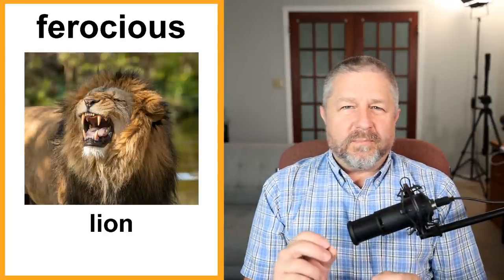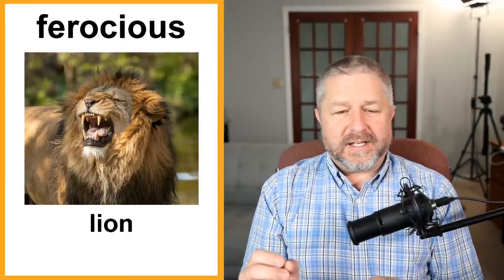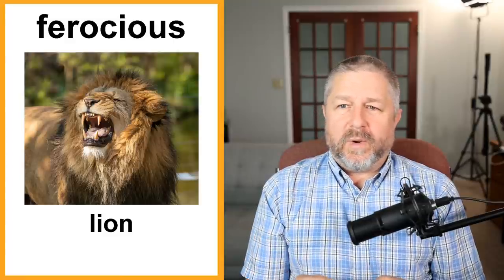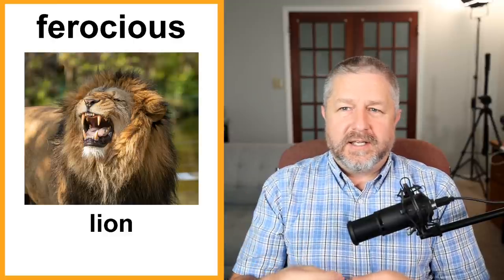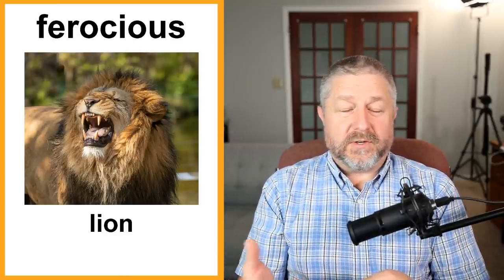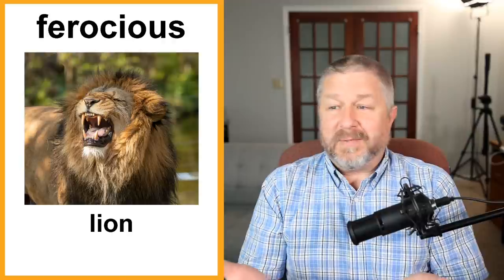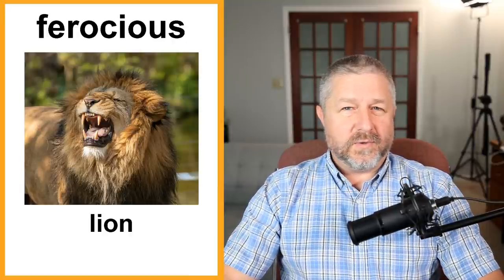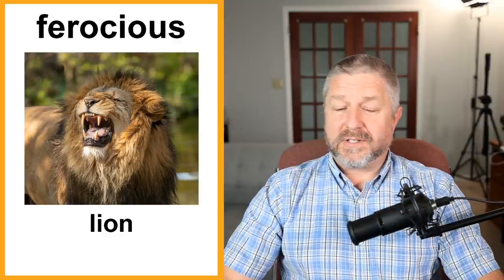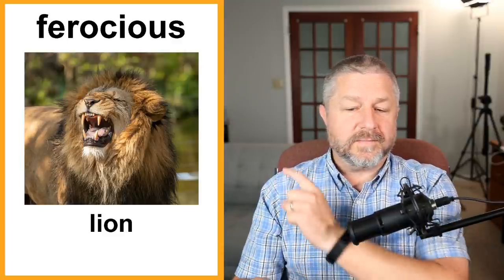Probably the word most associated with a lion is the word ferocious. When an animal is ferocious, it means it attacks quickly — it's violent, it hunts other animals in order to kill them and eat them. A lion is probably known as the most ferocious animal in the world. When I saw a lion at the zoo one time, I was actually a little bit scared. But the lion is definitely considered ferocious.